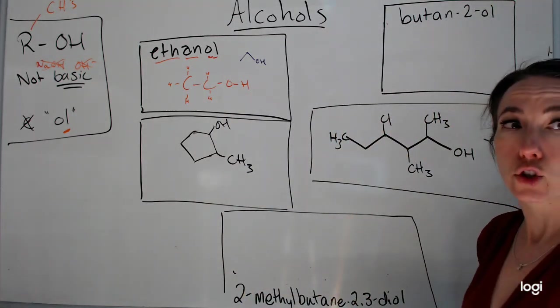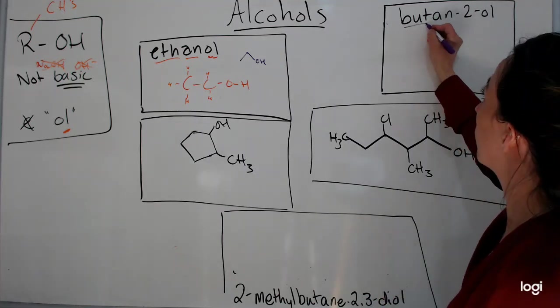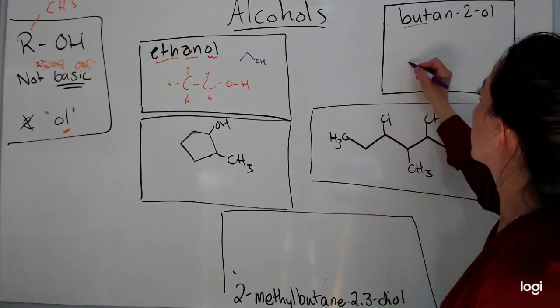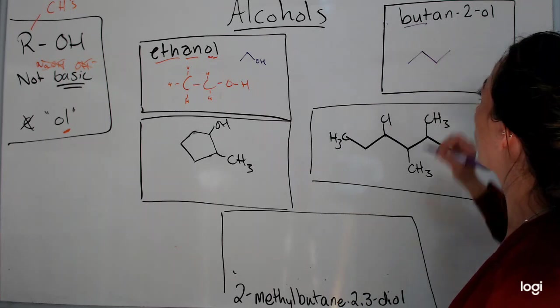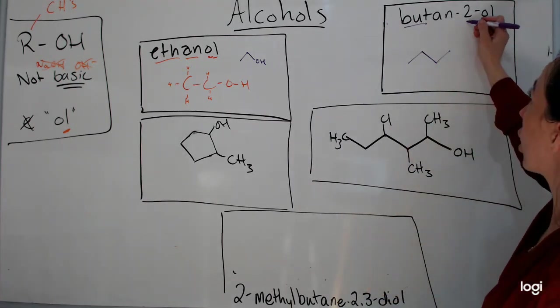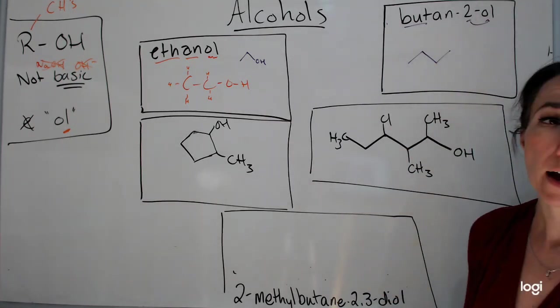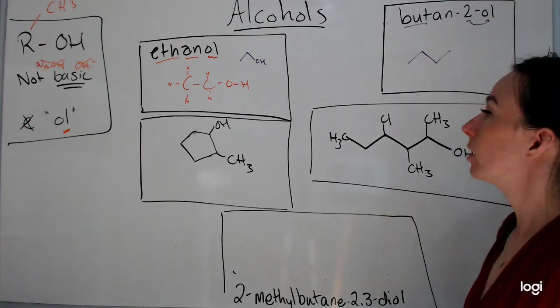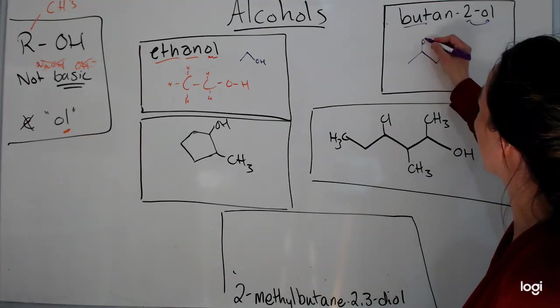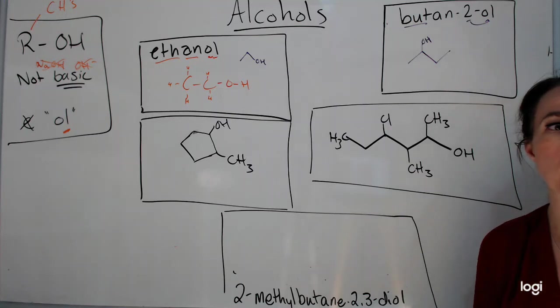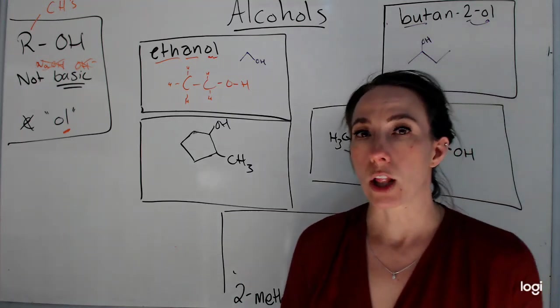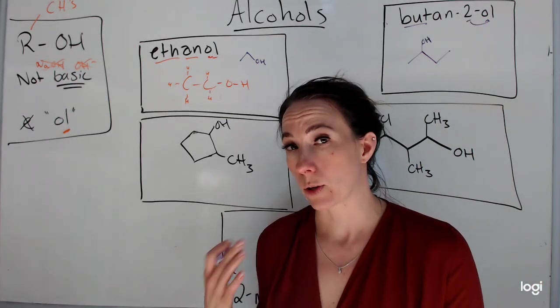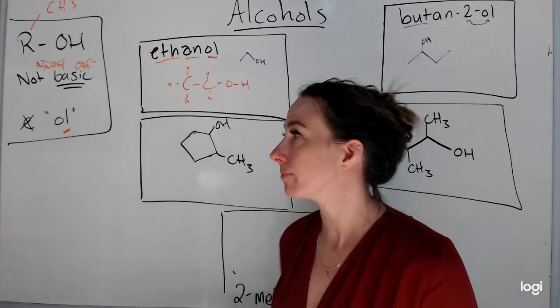So here's another one, butan-2-ol. When you're looking at butan-2-ol, but means four, so one, two, three, four. And off of carbon 2, I have my OH group. This would be butan-2-ol as opposed to butan-1-ol, which would have the OH off of the first carbon.